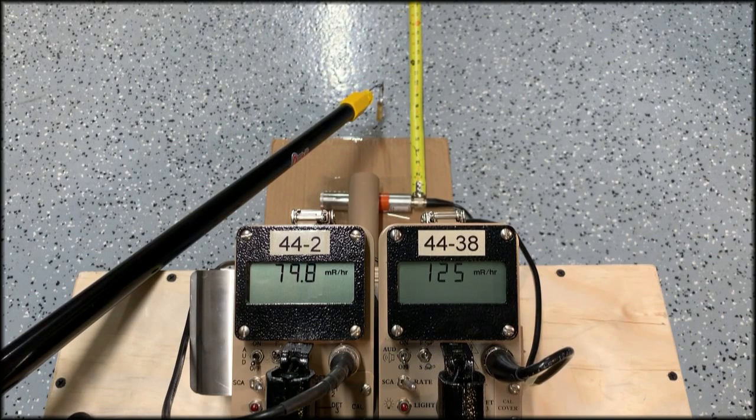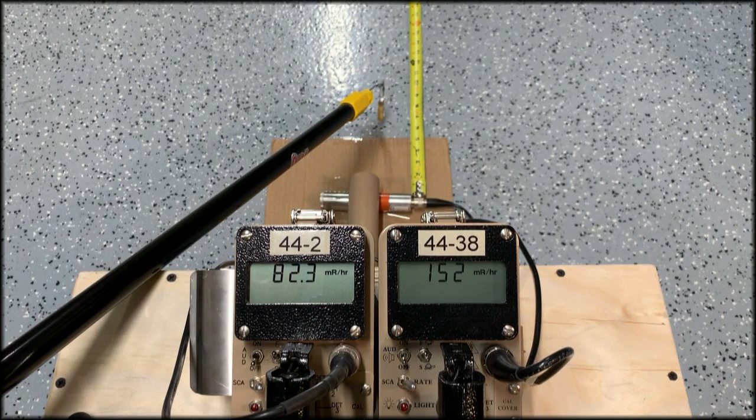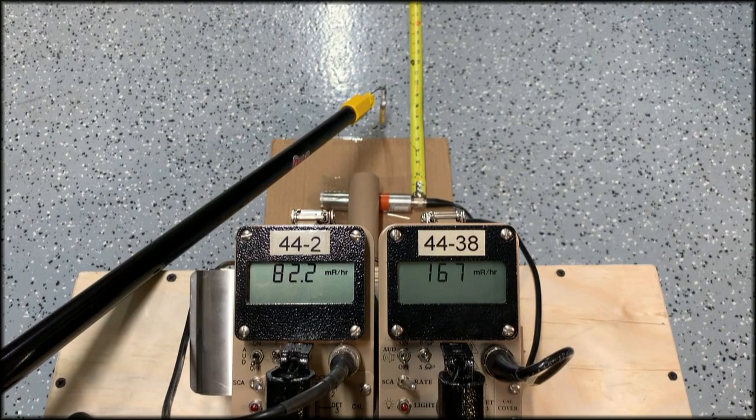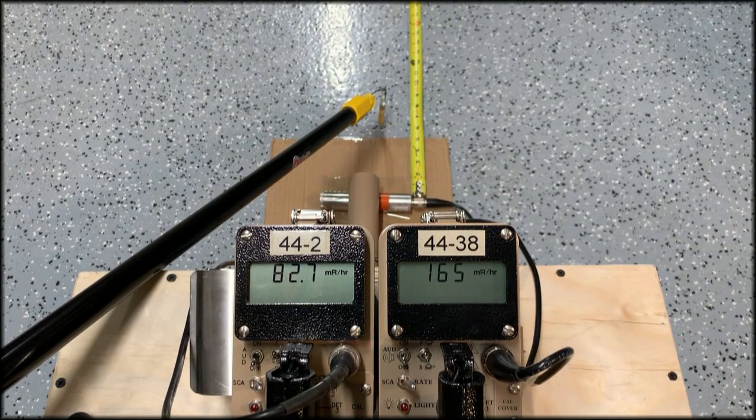Now I'm about six inches away. And what you see here is where you could kind of run into a problem. I'm in a 160 mR per hour field. And my Ludlum 44-2 detector is only telling me it's a little over 80 mR per hour.